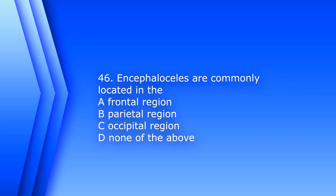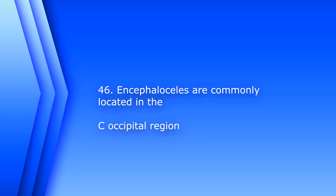Question 46: Encephaloceles are commonly located in the A) frontal region, B) parietal region, C) occipital region, or D) none of the above. The answer is C, occipital region. Encephaloceles are cranial defects that allow meninges and/or brain tissue to protrude out.